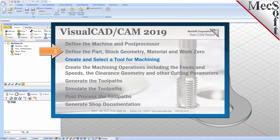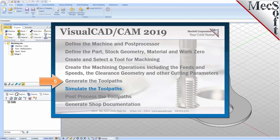Then, we'll create and select a tool to use for machining. We'll create the machining operations, including the feeds, speeds, the clearance planes, and other cutting parameters. Then, we'll generate the toolpaths, simulate the toolpaths, post-process the toolpaths, and then generate shop documentation.